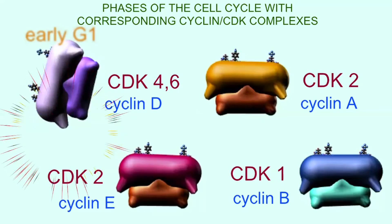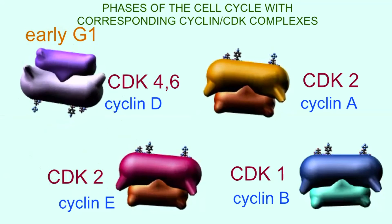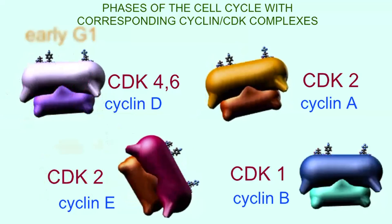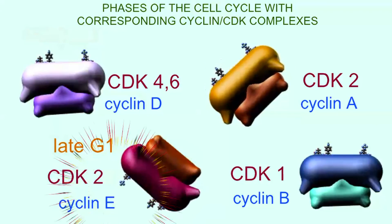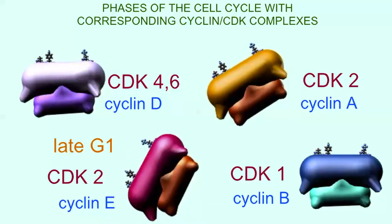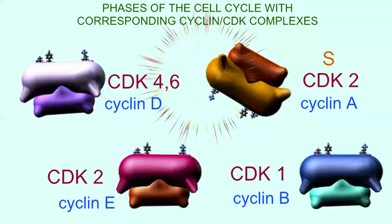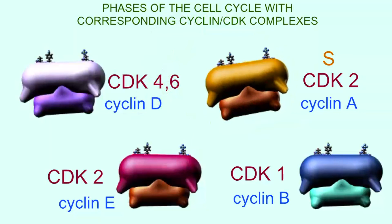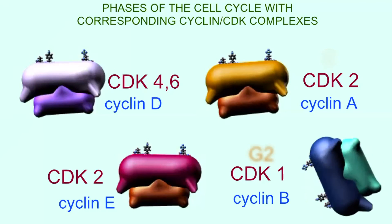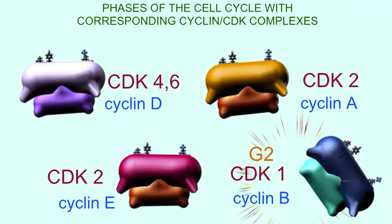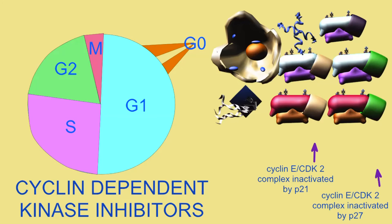In this active cell, cyclin E is produced, and after it binds to CDK2, this complex then increases the activity of genes required for the late G1 to S transition.